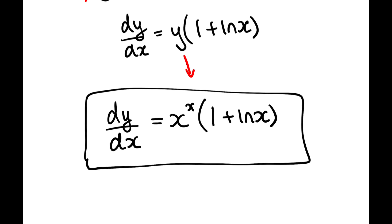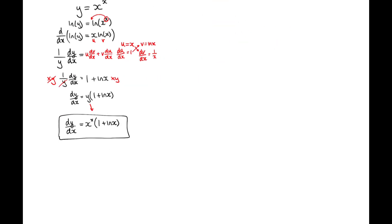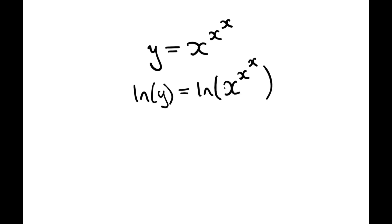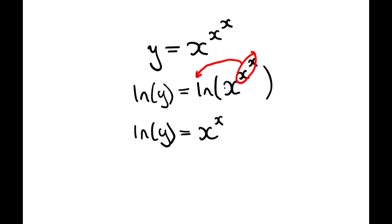Now we will differentiate x to the power of x to the power of x. We set y = x^(x^x). We do the exact same process — take the natural log of both sides: ln(y) = ln of x to the power of (x^x). Using the laws of logs, the power comes down in front, so we get ln(y) = x^x · ln(x).